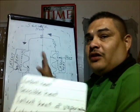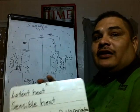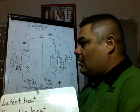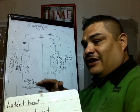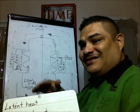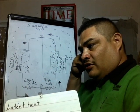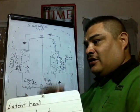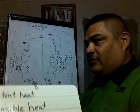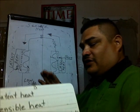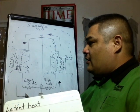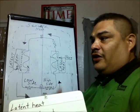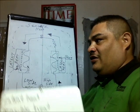First off, latent heat. We know that's hidden heat. What it means is there's a change in state or a change in matter. It could be from a liquid to a gas, a gas to a liquid, solid to a liquid, vice versa — any one of those combinations. But it doesn't register on a thermometer, so it's hidden. That's different from sensible heat.